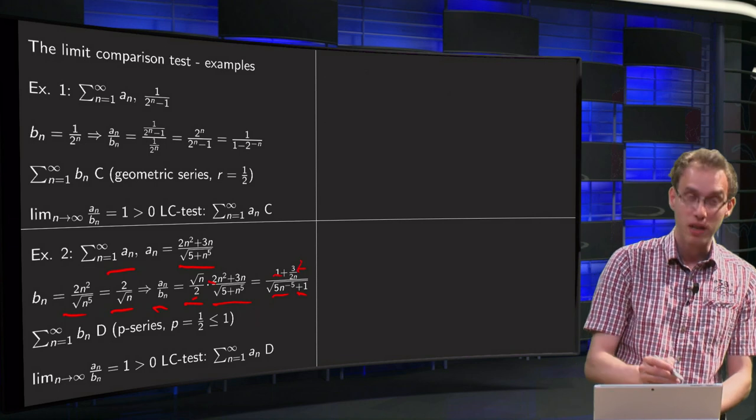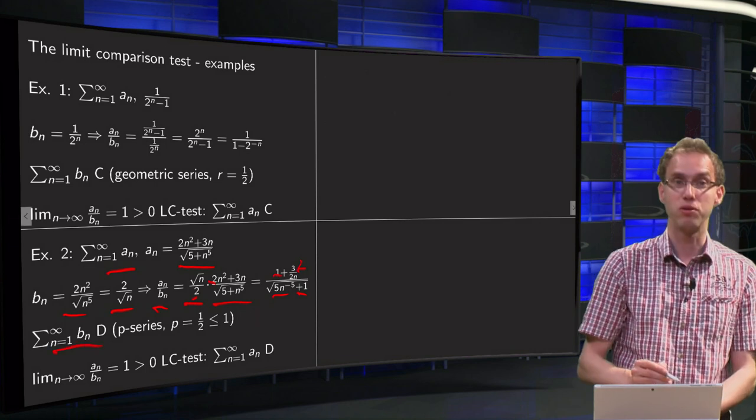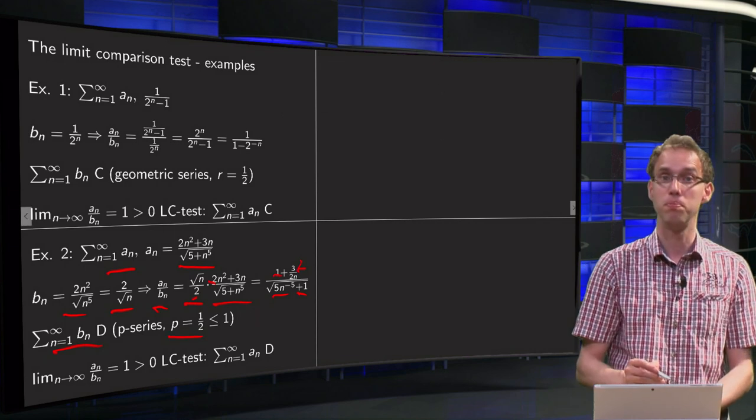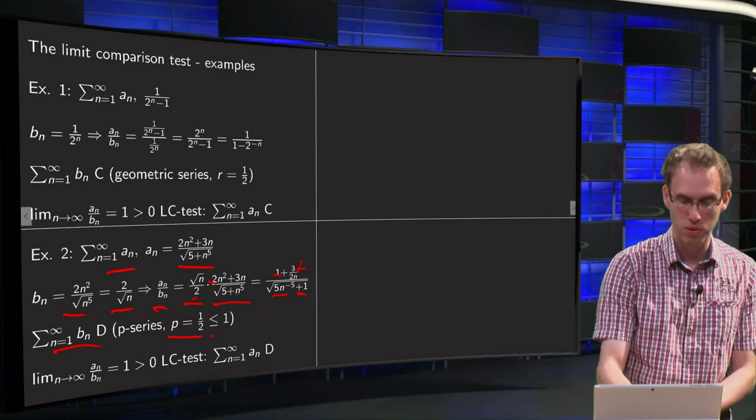Well, we know that the sum n from 1 to infinity of the bn is divergent, because it is a p-series, p equals 1 half, which is smaller or equal to 1.